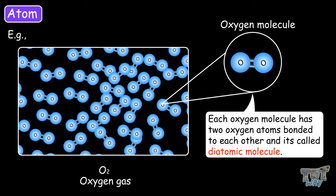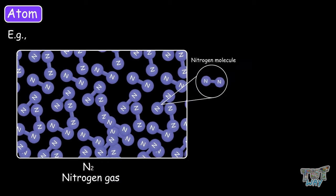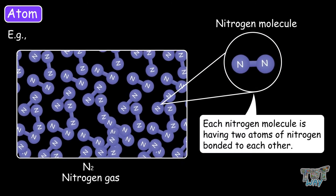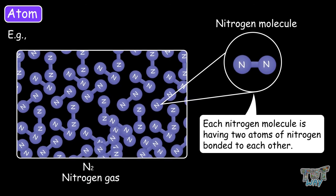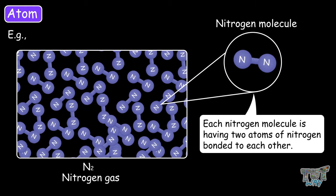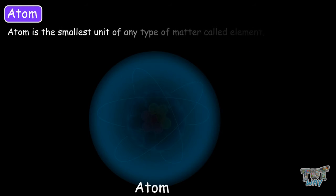Similarly, nitrogen gas has diatomic molecules, where each molecule has two atoms of nitrogen bonded to each other. So now you can understand, the atom is the smallest unit of any type of matter called elements.